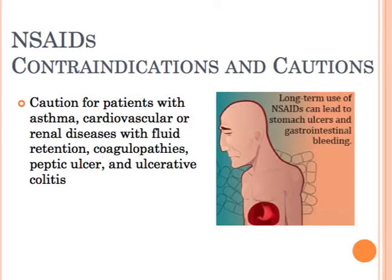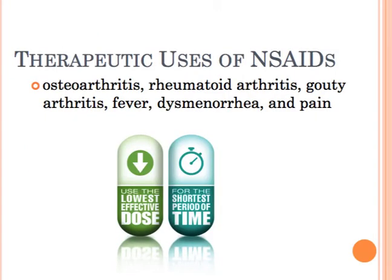NSAIDs should be given cautiously to patients with asthma, cardiovascular or renal diseases, especially with fluid retention, and also patients with coagulation problems, peptic ulcers, or ulcerative colitis. All NSAIDs can increase the risk of a serious cardiovascular clotting event like an MI or a stroke, and all NSAIDs may increase the risk of a serious GI event including bleeding. NSAIDs are useful in treating pain, but it's always a good idea to use the lowest effective dose for the shortest period of time.